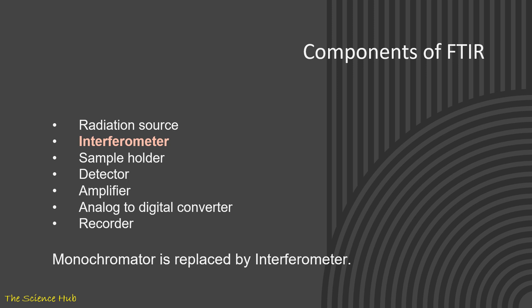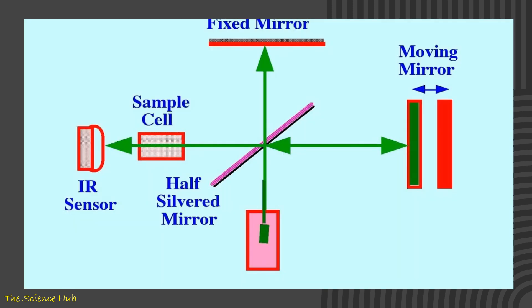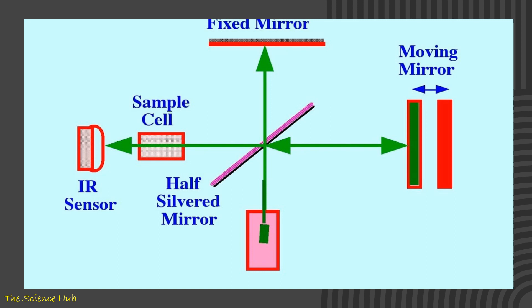Here you can observe the working of FTIR spectroscopy—how it works internally. Here two mirrors are there: one is moving mirror and fixed mirror. Sample cell is there and one mirror is there. Interferometer consists of the following components: two perpendicular plane mirrors, that is stationary and rotating mirror, and beam splitter. So there are three components of interferometer.